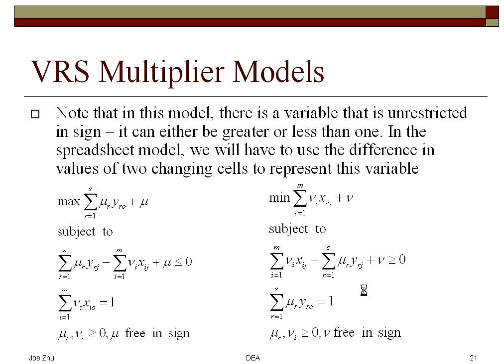Now if you notice that, for example, in the input oriented VRS multiplier model, in the objective function and in the constraints you actually have a new variable called mu and the mu is free in sign. What does this mean?